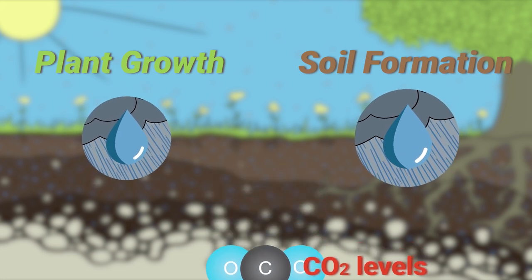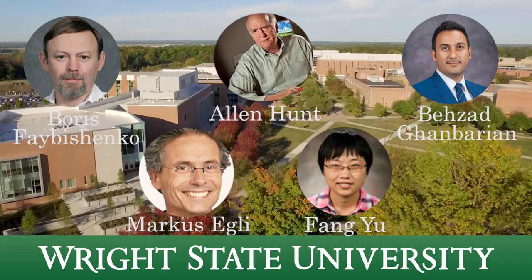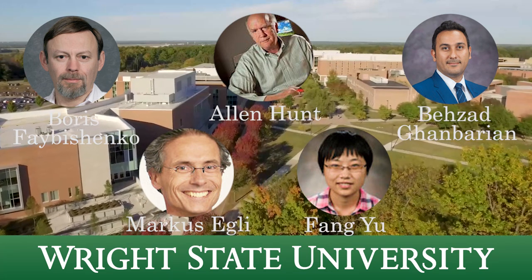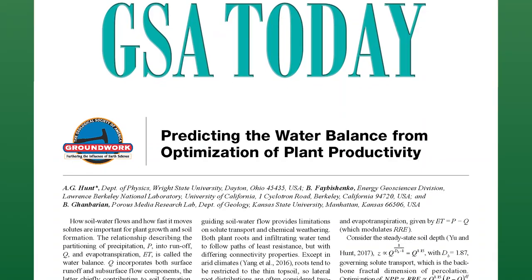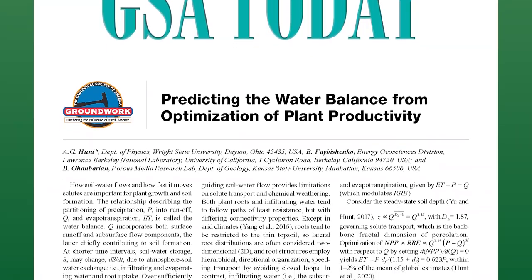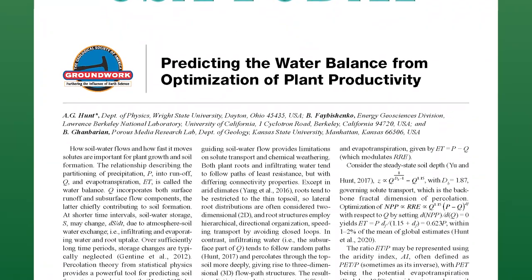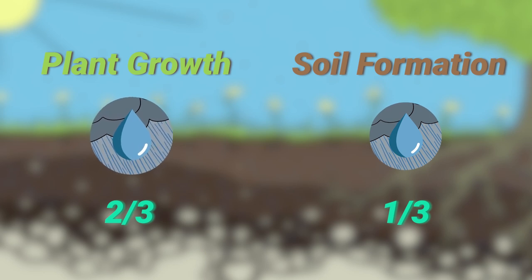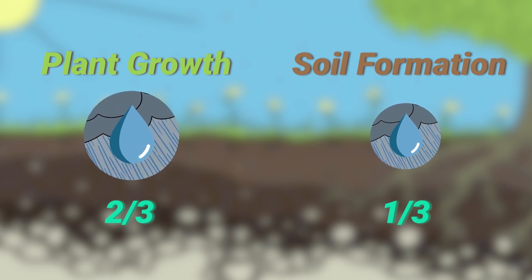So what is this ratio? Well, Alan Hunt, a physics professor at Wright State University, and his colleagues answered this question, publishing their results in the September 2020 issue of GSA Today. What they found is that the best situation for drawdown of atmospheric CO2 is when two-thirds of the precipitated water that makes it below ground goes to the plants and one-third goes to soil formation. And as it turns out, this ideal situation happens naturally.